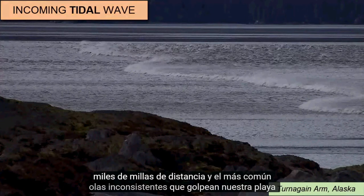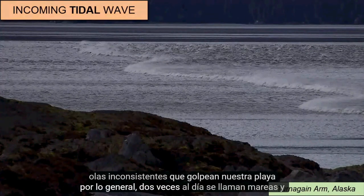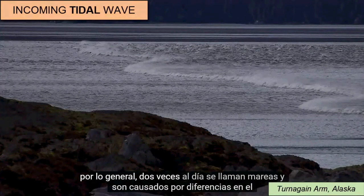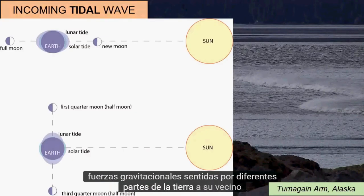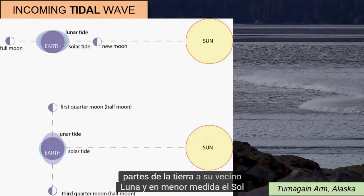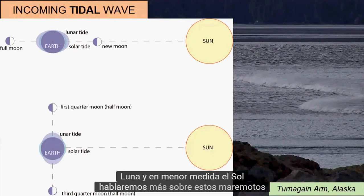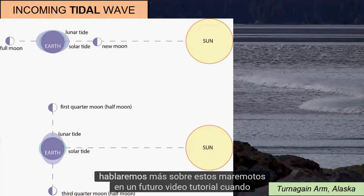Tsunami are rare waves that come from a landslide or earthquake that could also have happened a thousand miles away. And the most common and consistent waves that hit our beach, usually twice a day, are called tides and are caused by differences in the gravitational forces felt by different parts of the earth relative to its neighbor the moon, and to a lesser extent the sun. We'll talk more about these tidal waves in a future video tutorial.